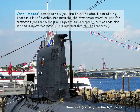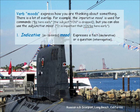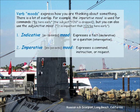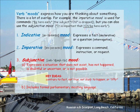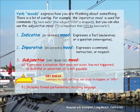Verb moods express how you are thinking about something, and there is a lot of overlap. For example, the imperative mood is used for commands, but you can also use the subjunctive mood. 1. Indicative mood expresses a fact or a question. 2. Imperative mood expresses a command, instruction, or request. 3. Subjunctive mood: A. Expresses a situation that does not exist, has not happened, is doubtful or uncertain, or is not possible. B. Includes formal, parliamentary, and meeting language.